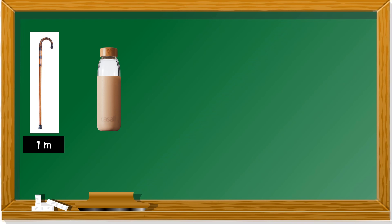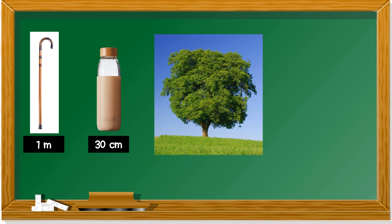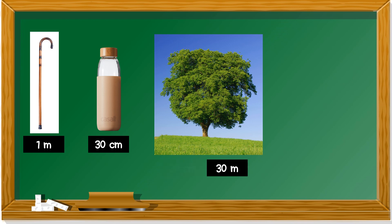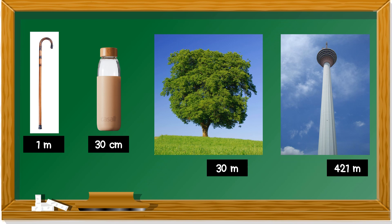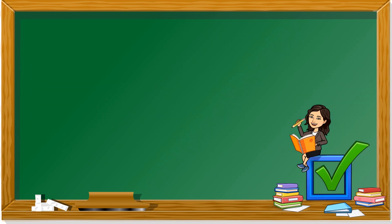How about this bottle? What's the length or what's the height? Is it 30 cm or 300 cm? The more logical one — yang lebih sesuai — is 30 cm. How about this one? A tree. Is it 30 cm or 30 meter? 30 meter — 30 cm is too short. How about this? This is Menara KL or KL Tower. Is it 42 meter or 421 meter? It's 421 meter.